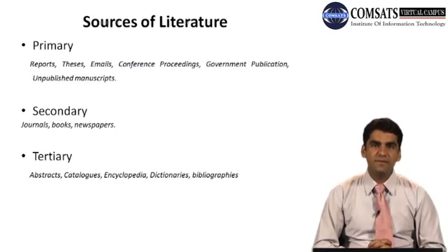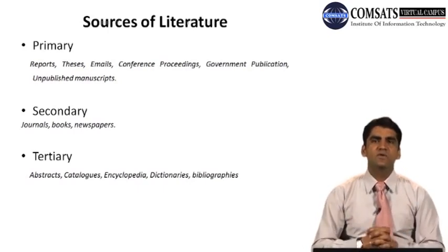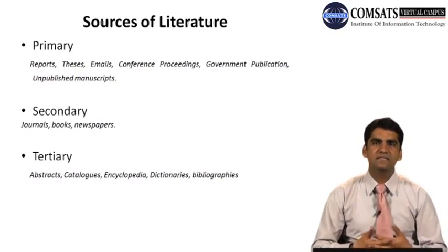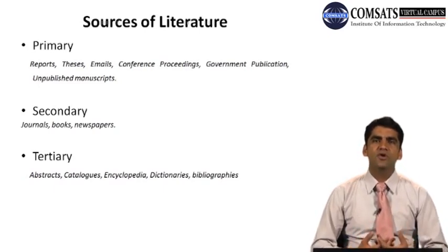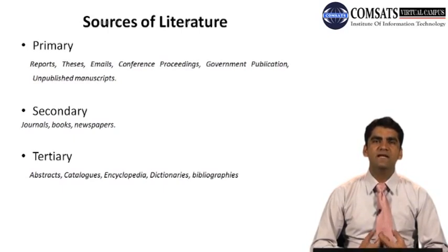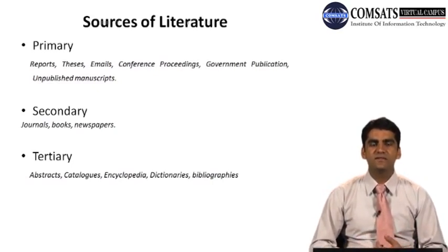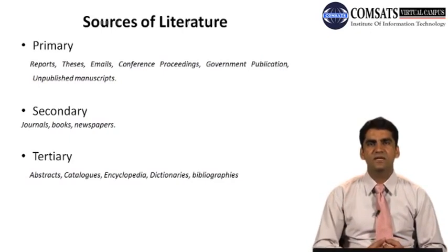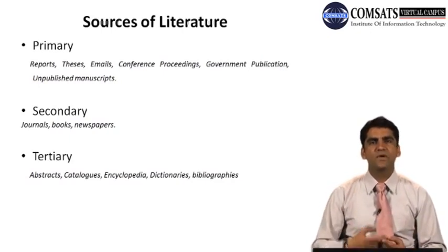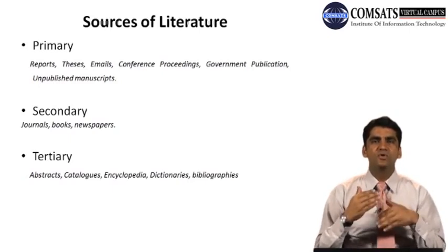What do we include as primary sources of literature? They include reports — for example, if you are looking at things relevant to economic growth and international issues, you have the World Development Report published by the World Bank every year, the Human Development Report published by UNDP, International Financial Statistics, or the Global Development Finance Report published by the IMF and World Bank. These reports can help you answer questions relevant to your research inquiry. You can find them in your research library, organization library, department library, or from other university libraries.